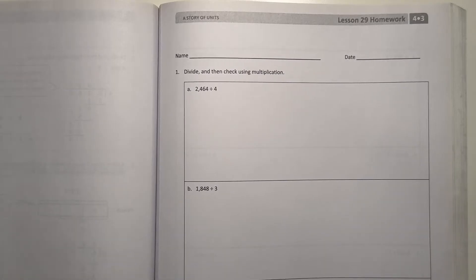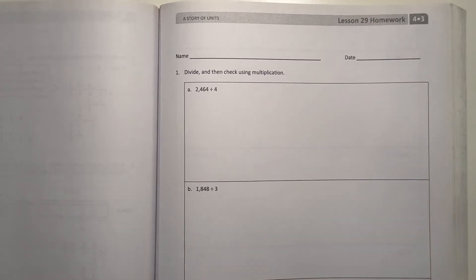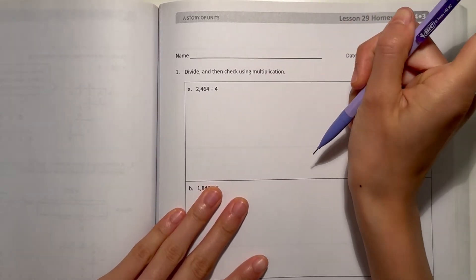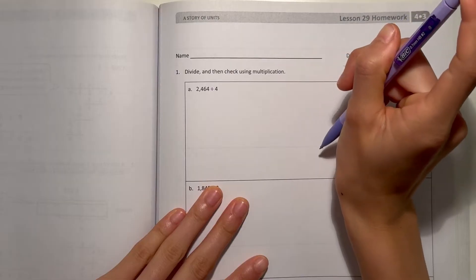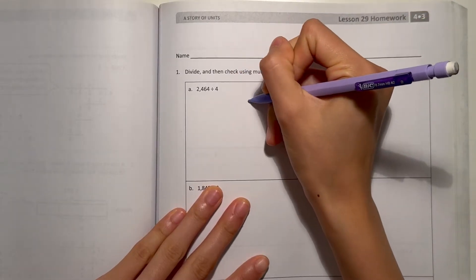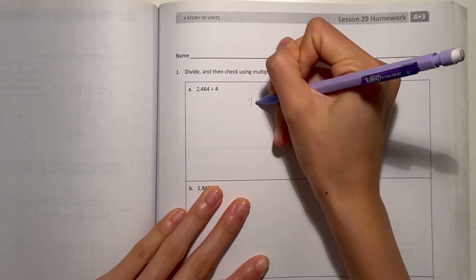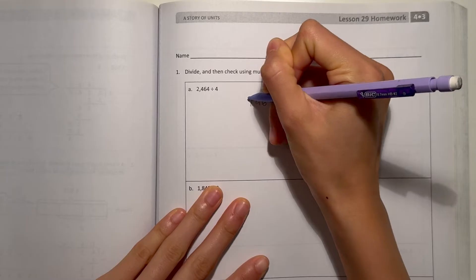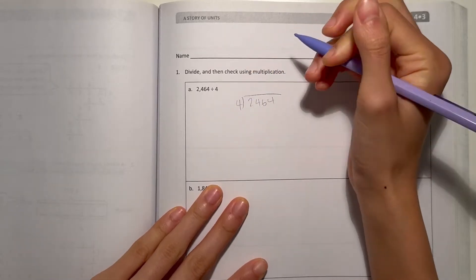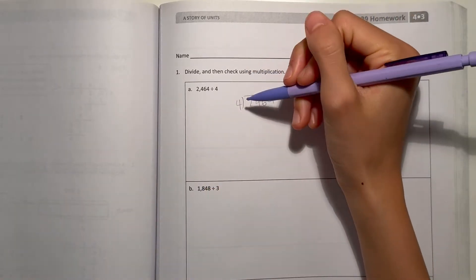Number one: divide and then check using multiplication. Let's do long division. 2,464 divided by 4. First we look at the 2.